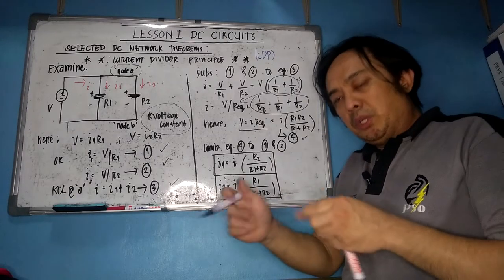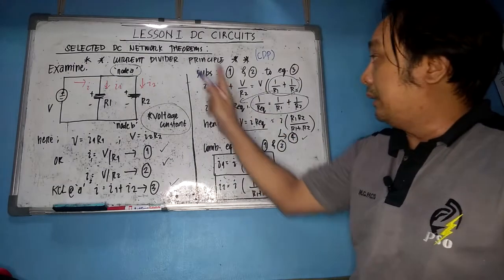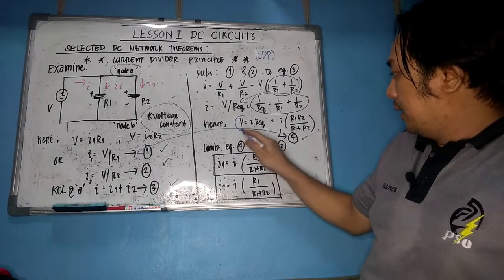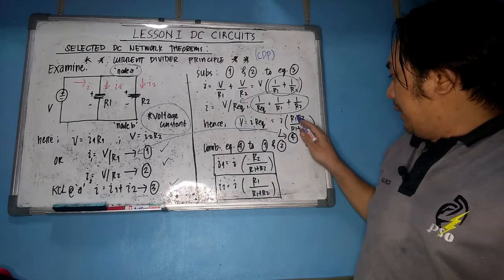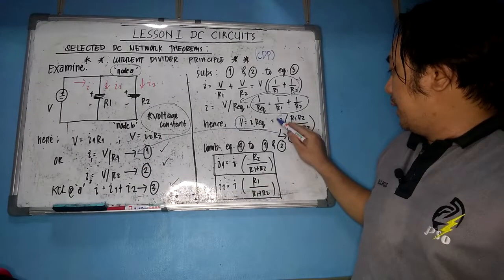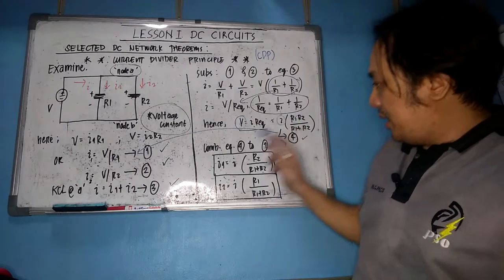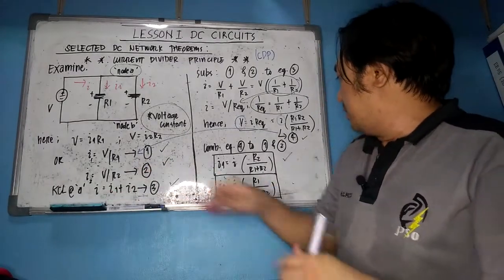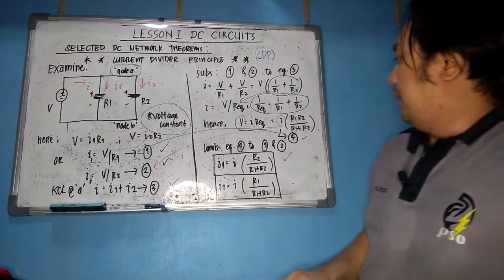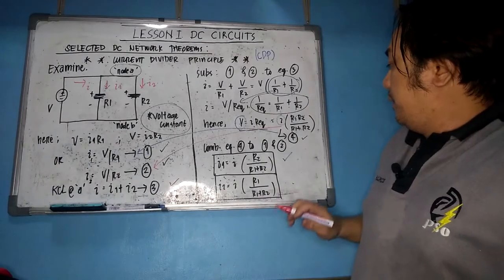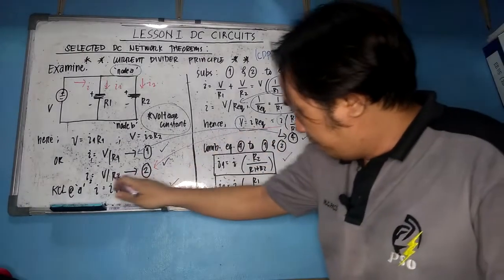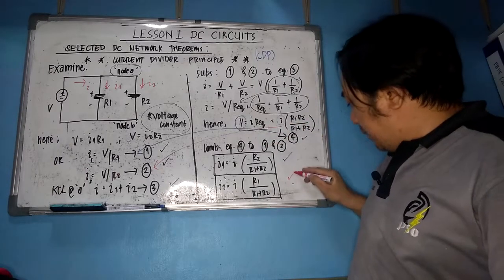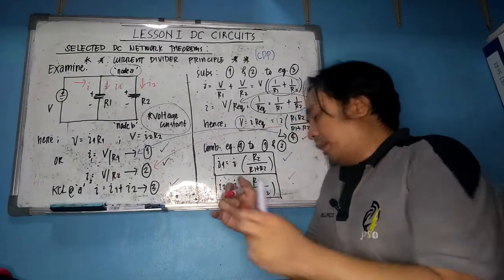Substituting equation 4 back into equations 1 and 2 to get the current divider formulas: for I1, substituting V = I × R_EQ into I1 = V/R1, R1 cancels, giving I1 = I × R2 / (R1 + R2). Similarly for I2, R2 cancels, giving I2 = I × R1 / (R1 + R2).